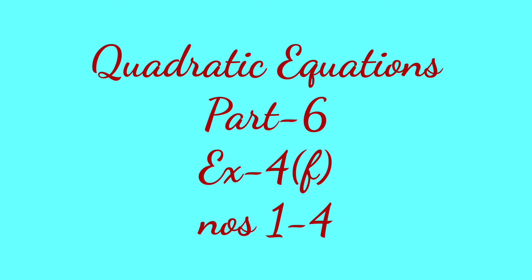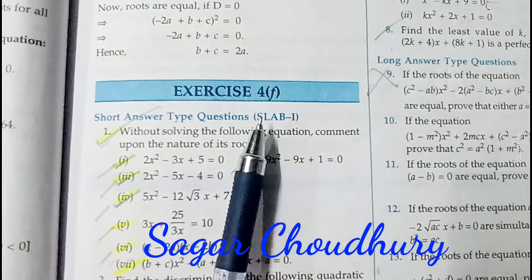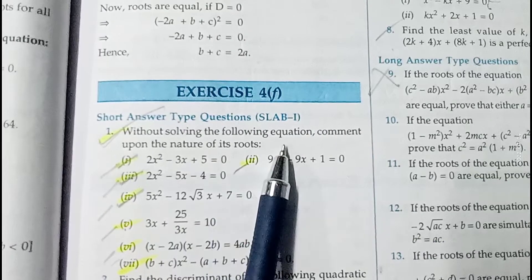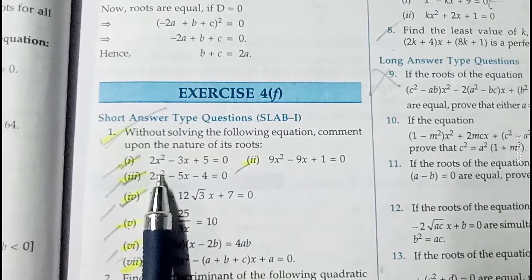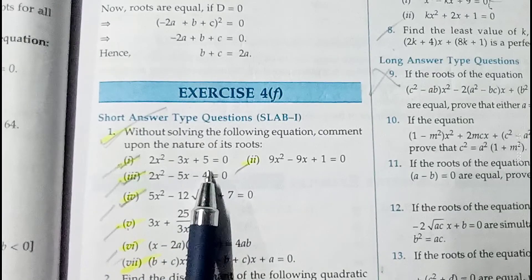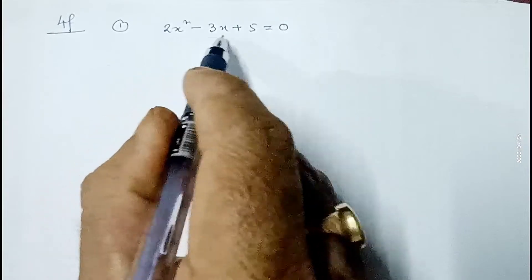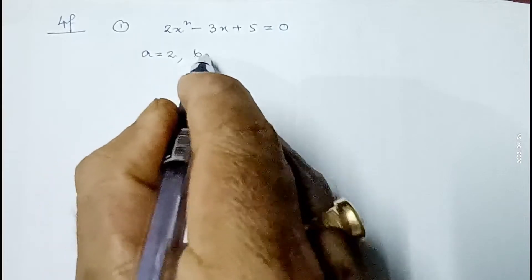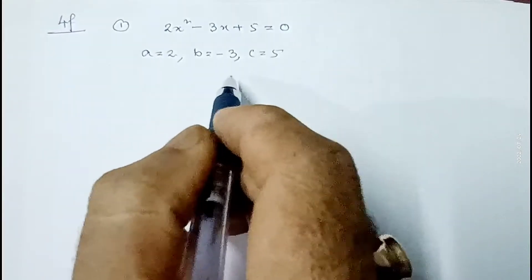Hello students. In the last part of quadratic equations I completed 4e, and today I'm starting from 4f. The first question is: without solving the following equation, comment upon the nature of its roots. First question is 2x² - 3x + 5 = 0. Comparing with ax² + bx + c = 0, we get a = 2, b = -3, and c = 5.